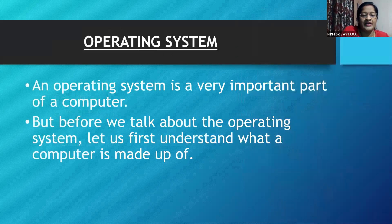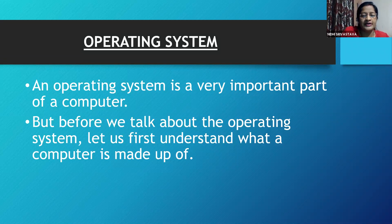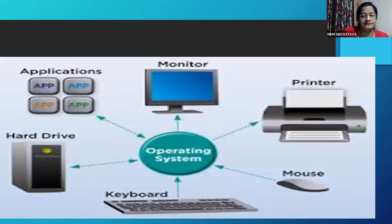An operating system is a very important part of a computer, but before we talk about the operating system, let us first understand what a computer is made up of. The operating system is connected with applications, monitor, printer, mouse, keyboard, and hard drive.